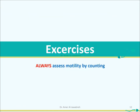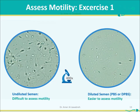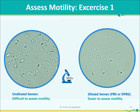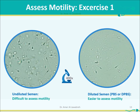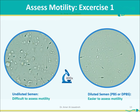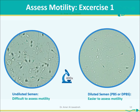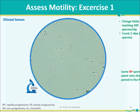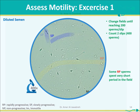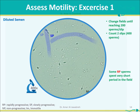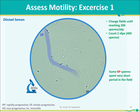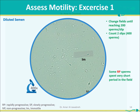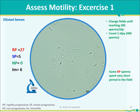Exercise 1: Always assess motility by counting. Undiluted semen is difficult to assess motility, while diluted semen showing dispersed sperms is easier to assess. Assess motility using the 400x objective. Change fields until reaching 200 sperms per slip; count 2 slips for 400 sperms in total. Note that some rapidly progressive sperms spend a very short time in the field — count them. Expected results: RP 27, SP 5, NP 0, Immotile 6.